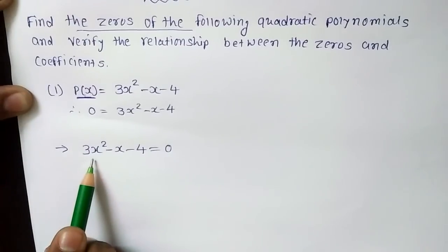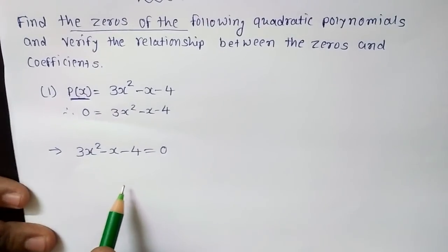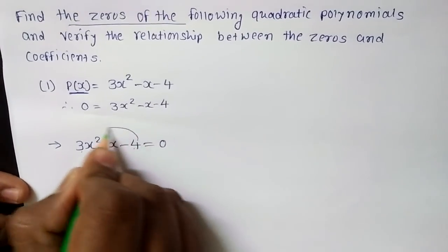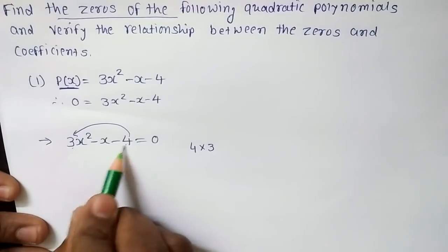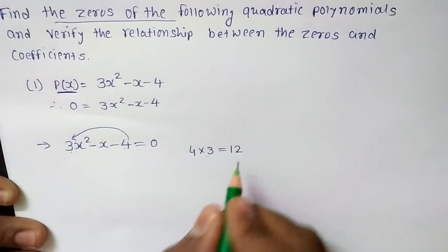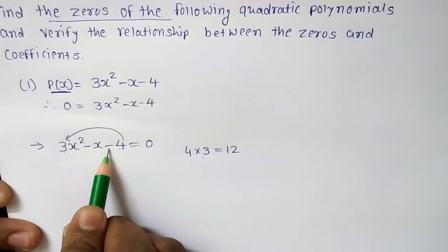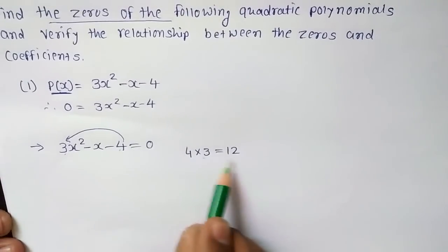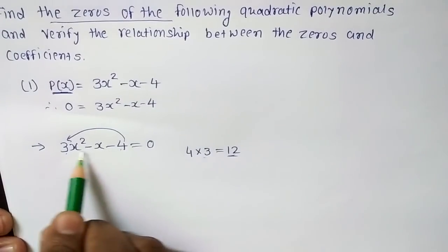Let us try to find out the zeros of this polynomial using factorization. We know that the last term and the coefficient of x² will be multiplied with each other. So we do 4 into 3. We need to factorize 12 in such a way — observing the sign here, which is minus — meaning we need to subtract both factors from each other to get the middle term.